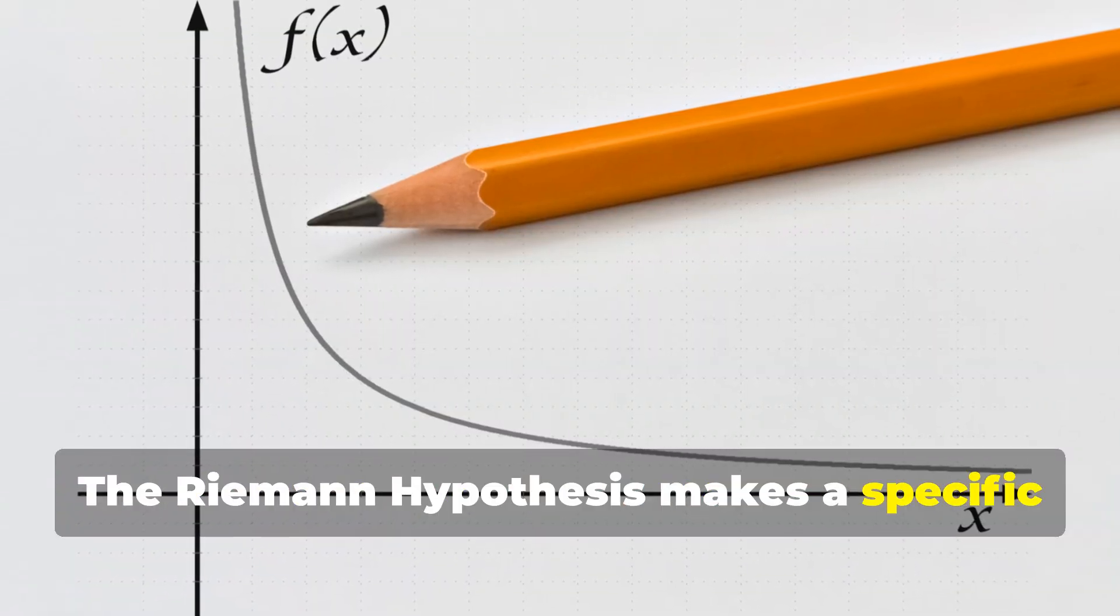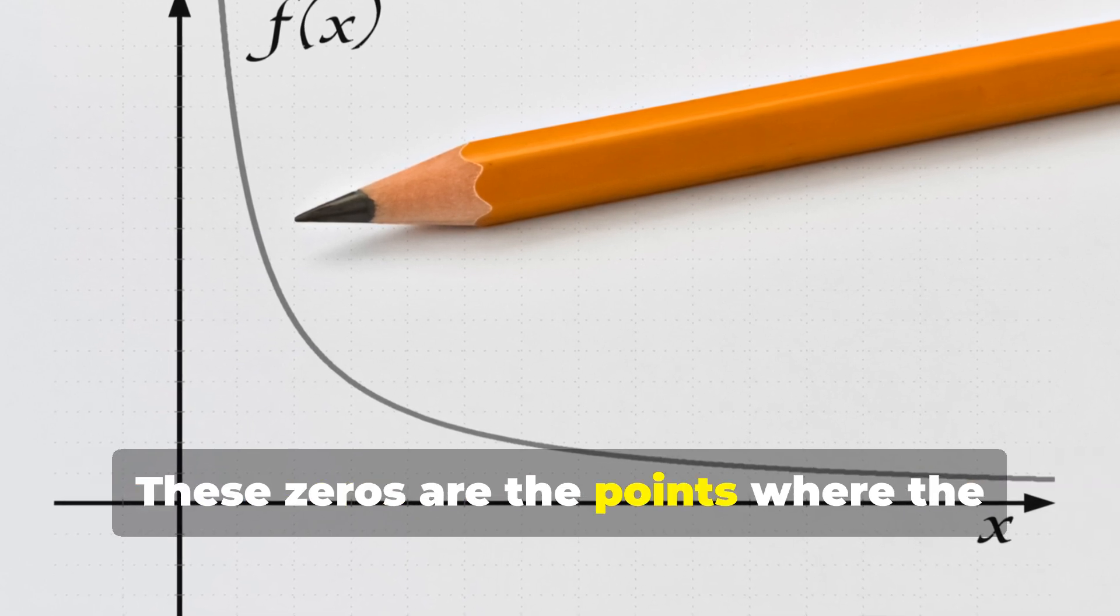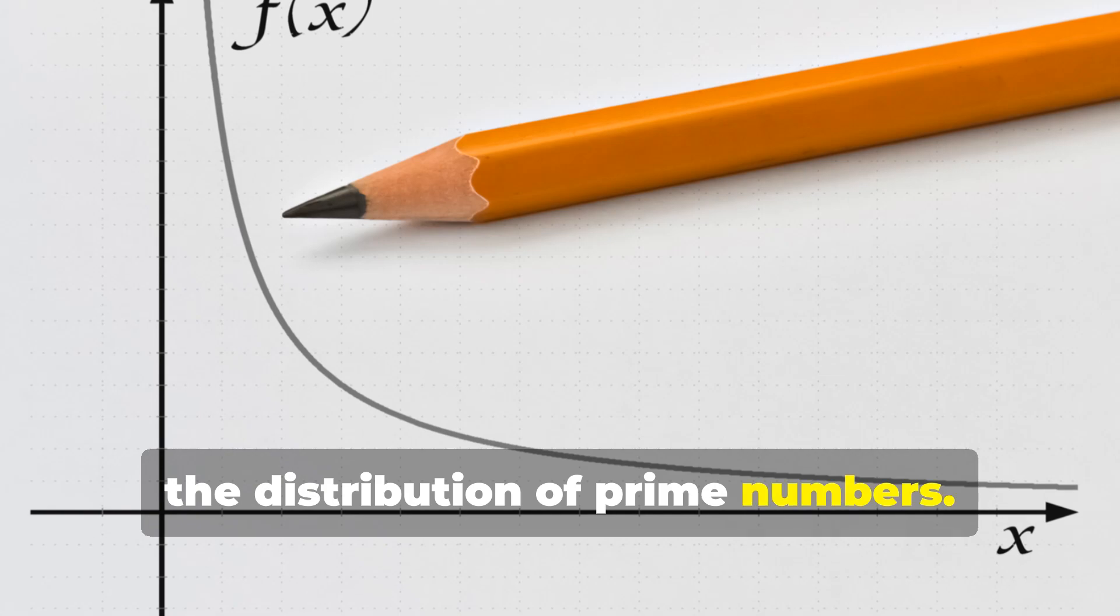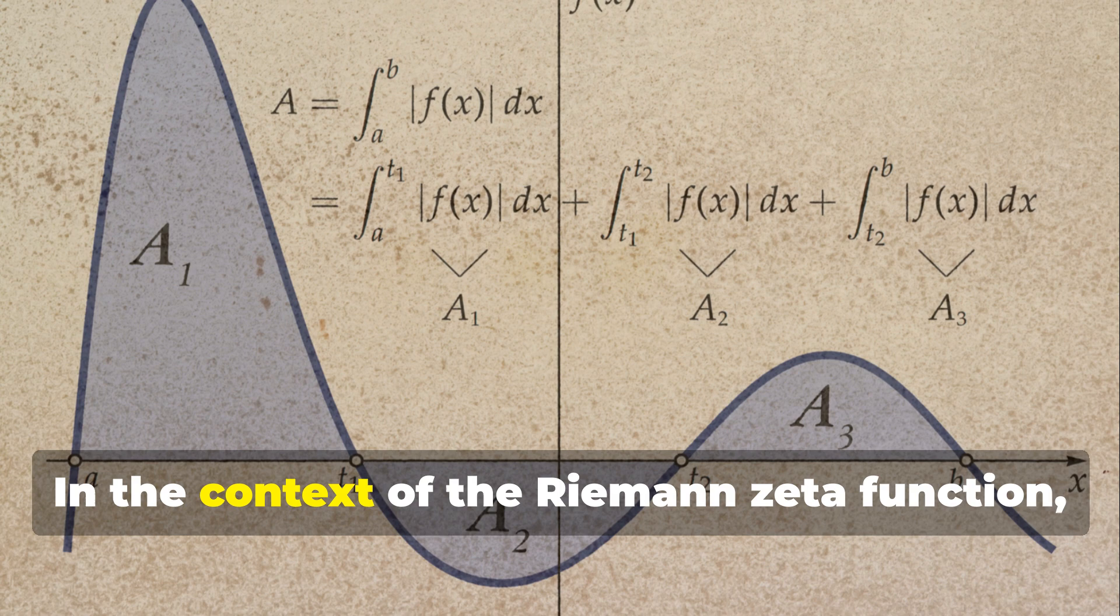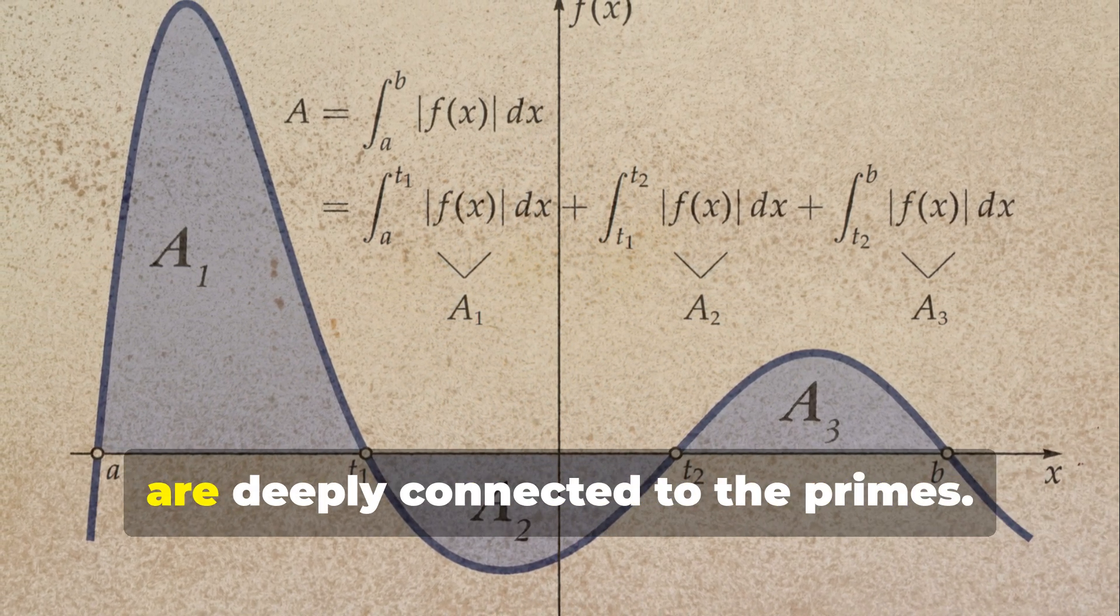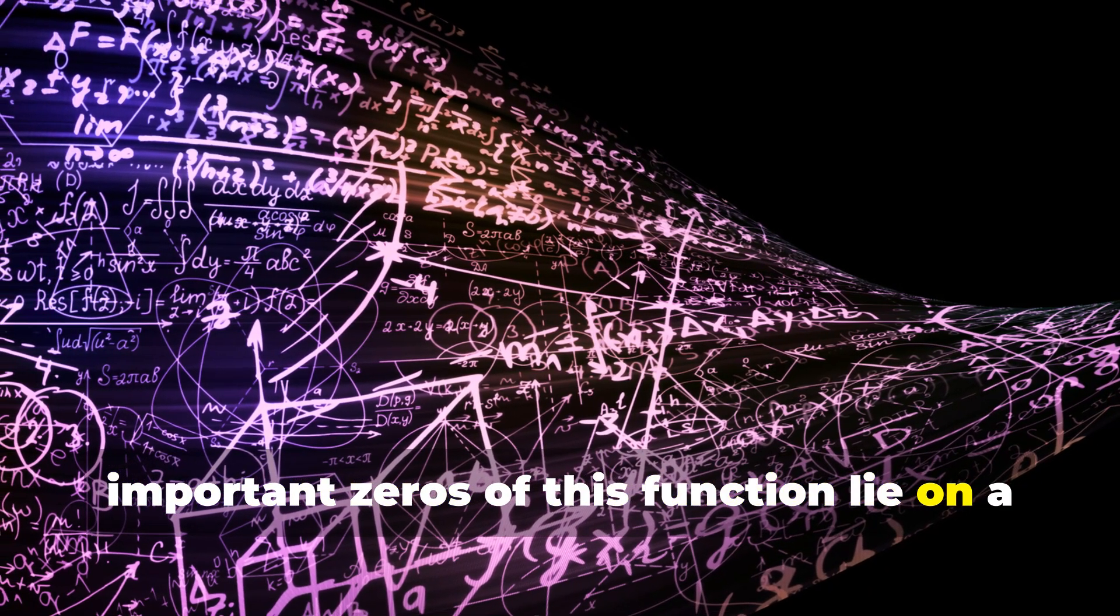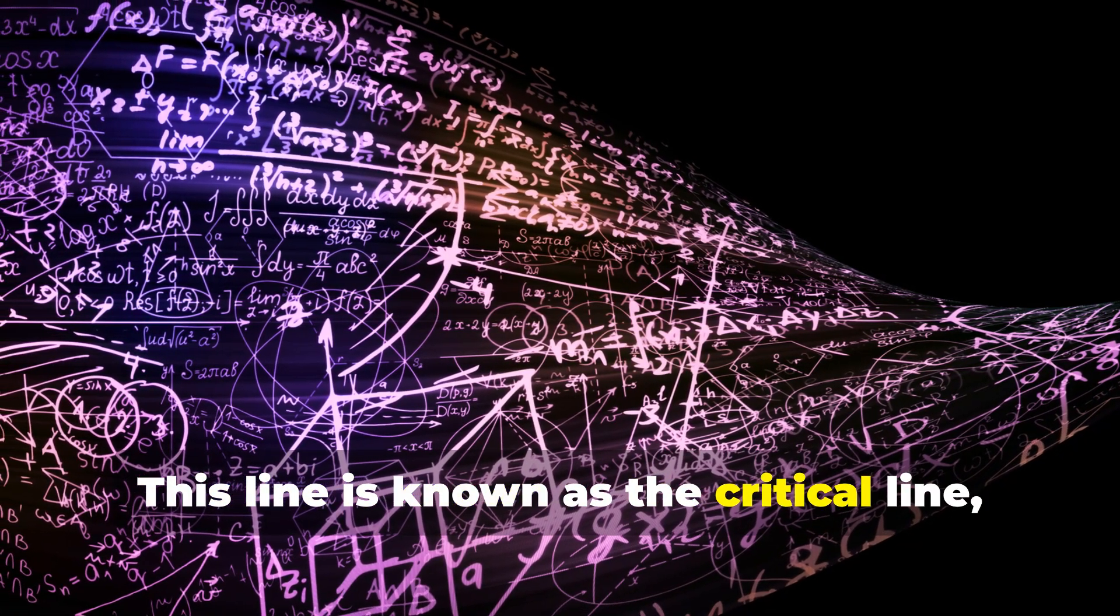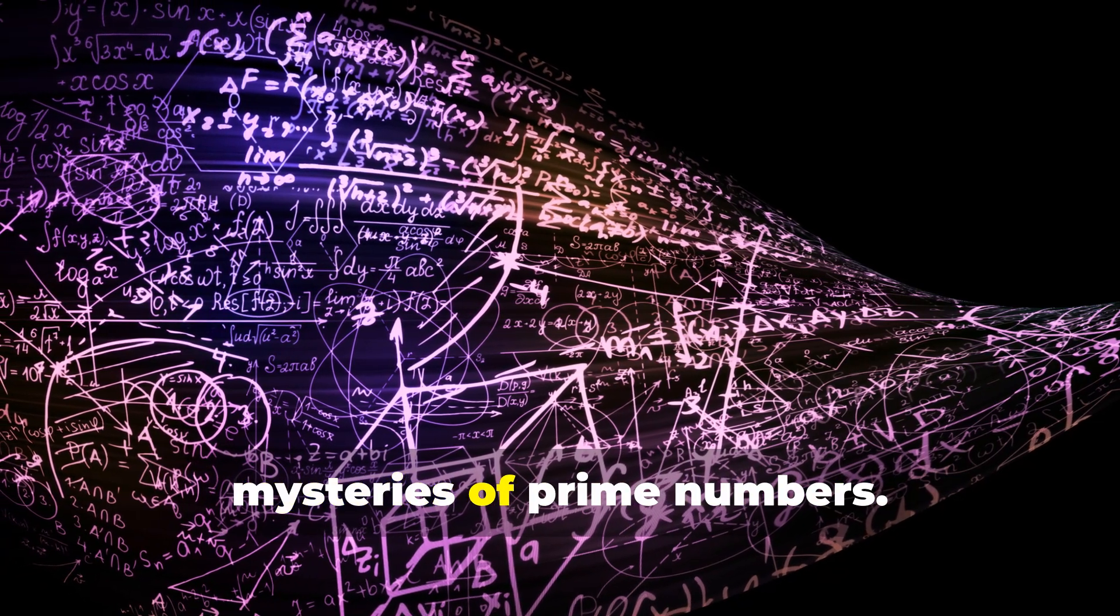The Riemann hypothesis makes a specific prediction about the zeros of the zeta function. These zeros are the points where the function equals zero, and they hold the key to understanding the distribution of prime numbers. In the context of the Riemann zeta function, these zeros are not just any numbers, but are deeply connected to the primes. Riemann conjectured that all the important zeros of this function lie on a specific vertical line in the complex plane. This line is known as the critical line, and the hypothesis suggests that understanding these zeros will unlock the mysteries of prime numbers.